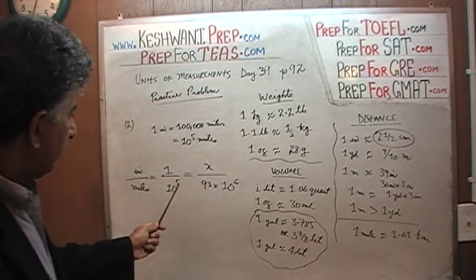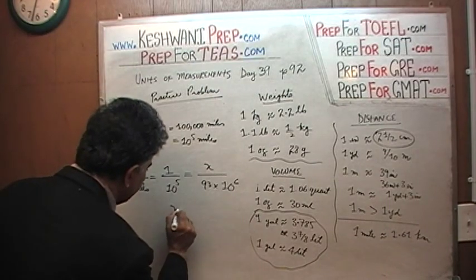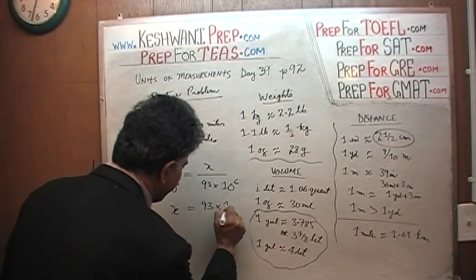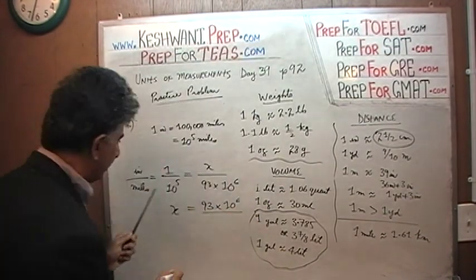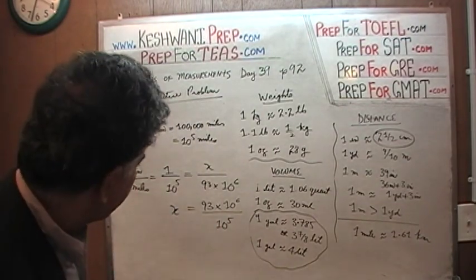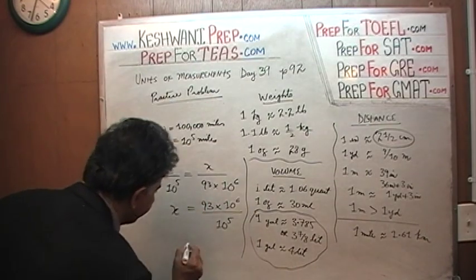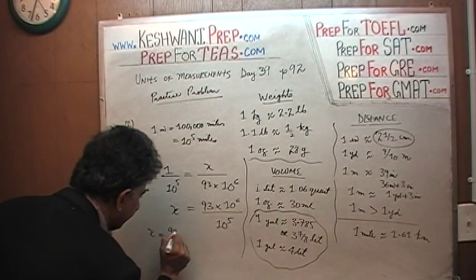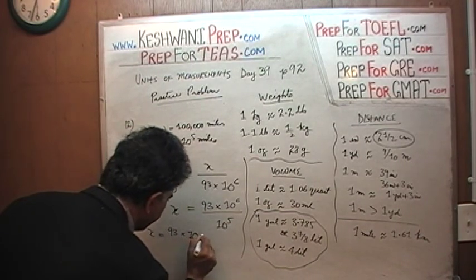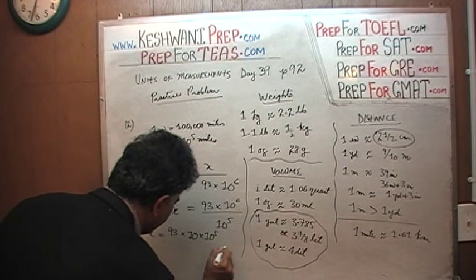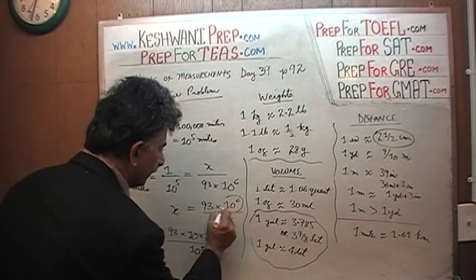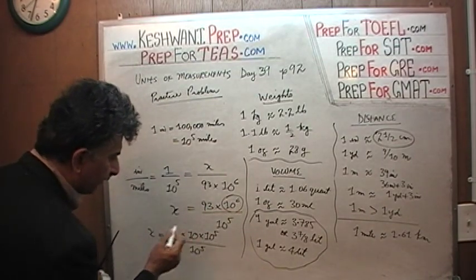Let's find out. We have to cross multiply. When we cross multiply we find that x equals 93 times 10 raised to 6 divided by 10 raised to 5. Now 10 raised to 6 can be written as 10 times 10 raised to 5.